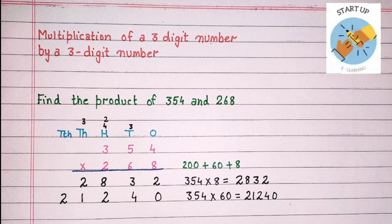And 3 will be carried on to the thousands place. Now 6 will be multiplied by 3: 6 threes are 18, plus 3 which were carried over, is equal to 21. So 1 will be written under the thousands place and 2 will be written further in the ten thousands place. So by multiplying 354 by 60, we get partial product 2, that is 21,240.